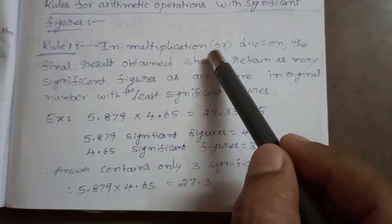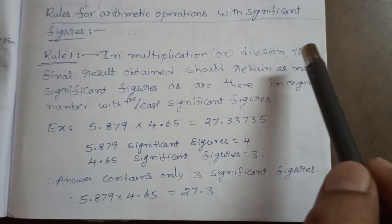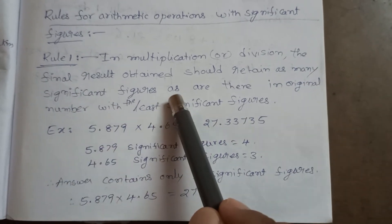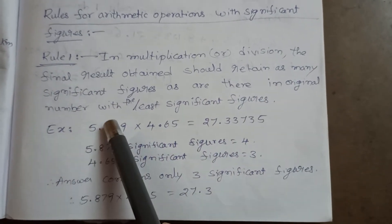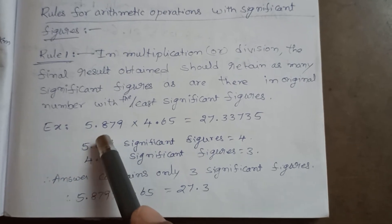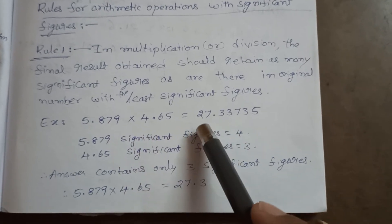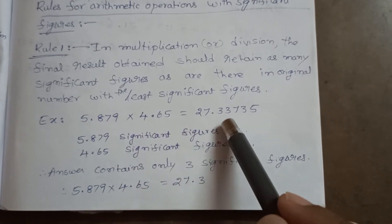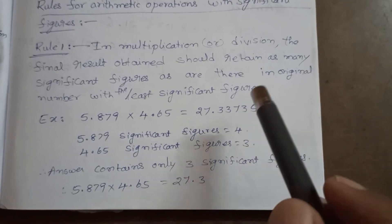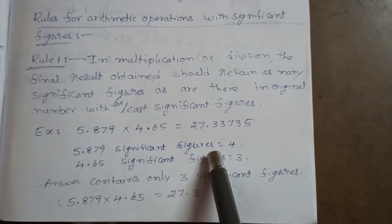Rule 1: In multiplication or division, the final result obtained should retain as many significant figures as there are in the original number with the least significant figures. For example, 5.879 multiplied by 4.65 gives the answer 27.33735. According to the rules for significant figures in multiplication, the significant figures of 5.879 are 4.